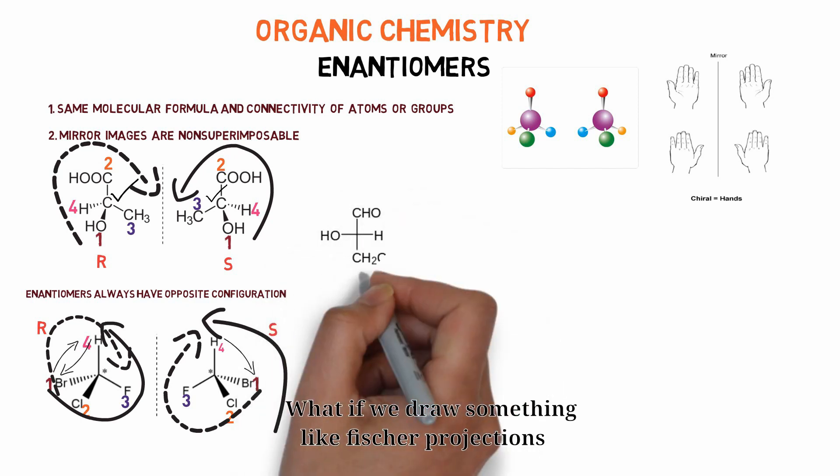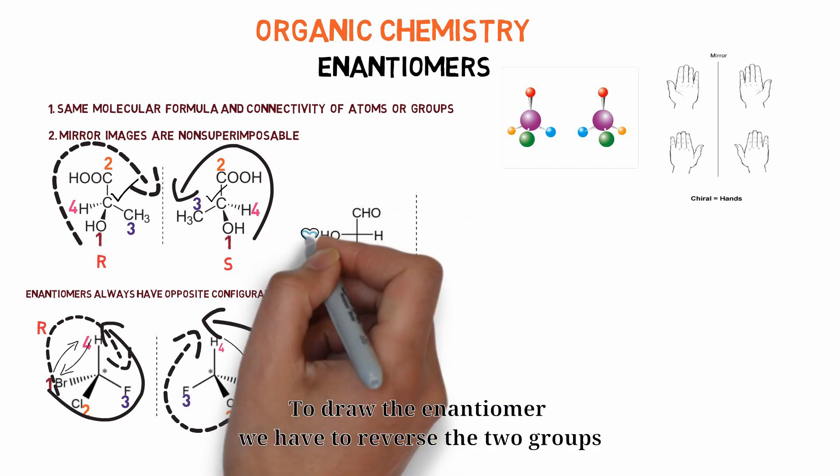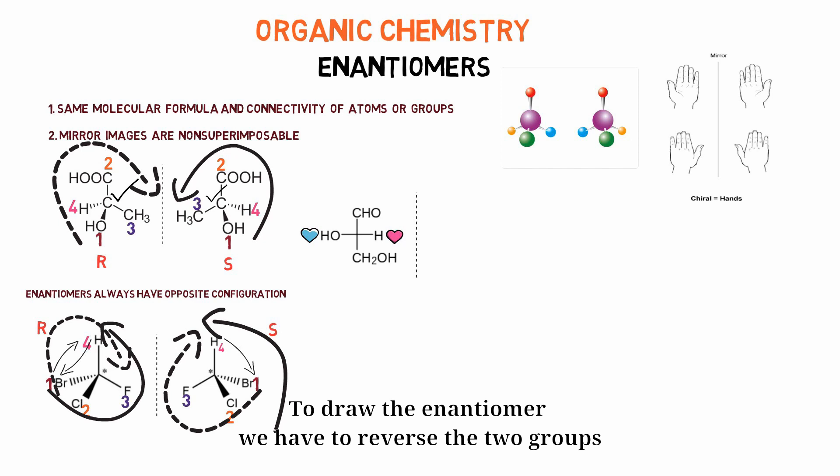What if we draw something like Fischer projection? To draw the enantiomer, we have to reverse the two groups that are marked here in this case, hydrogen and hydroxyl group.